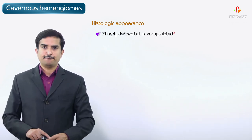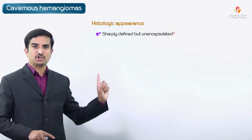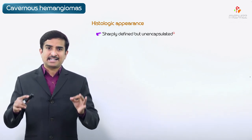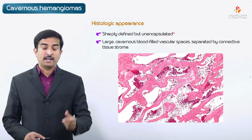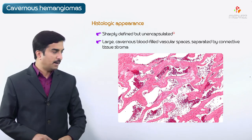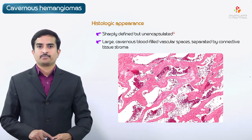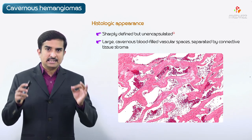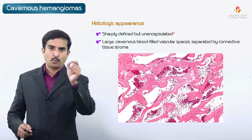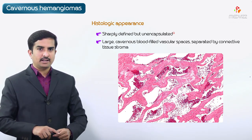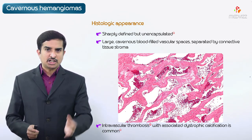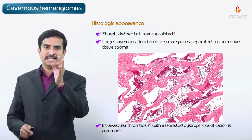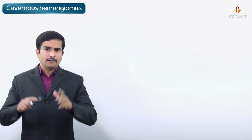Under histological examination, the mass is sharply defined but unencapsulated. This histological section reveals it is composed of large cavernous blood-filled vascular spaces separated by connective tissue stroma. Because of these blood-filled vascular spaces, one can clearly identify intravascular thrombosis associated with dystrophic calcification, which is most commonly seen.